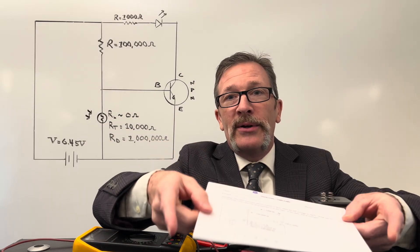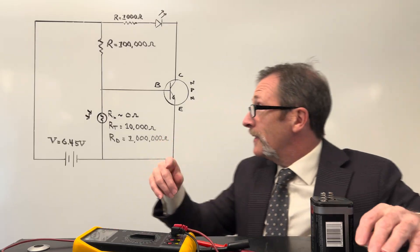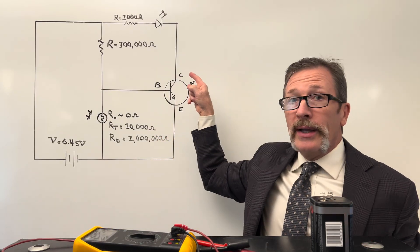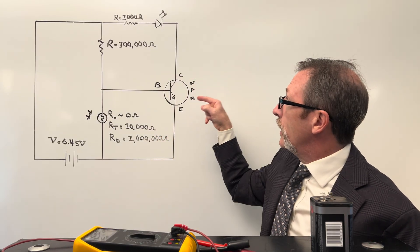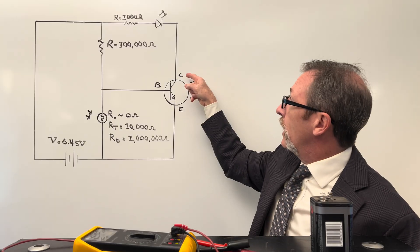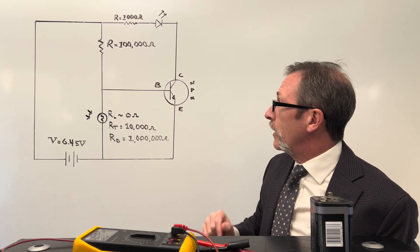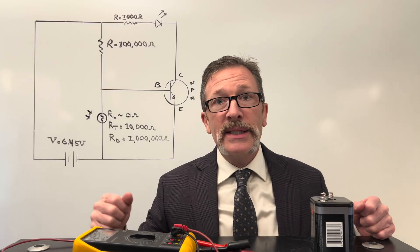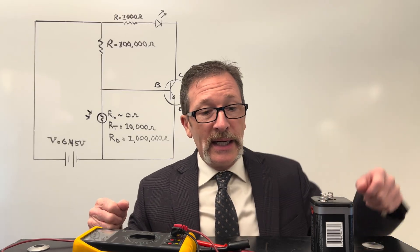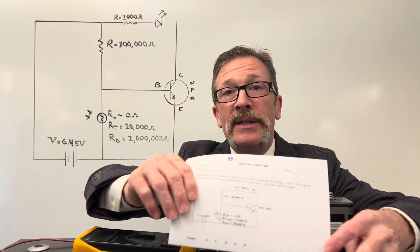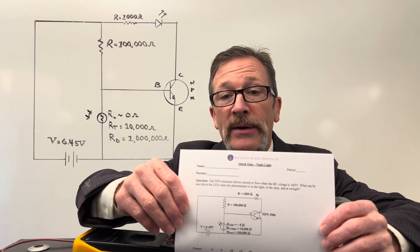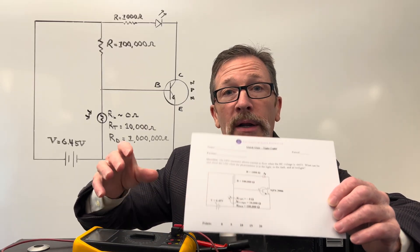And remember we are using an NPN transistor. This is a collector and our base and emitter right here. Let your students take a guess of what's going to happen here. Maybe they can even figure it out using their values and then have them mark their confidence.